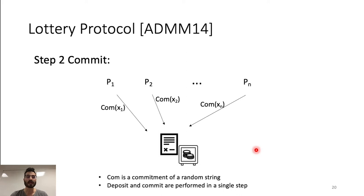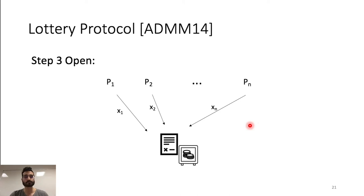In step 1, called the deposit phase, all the players deposit some amount of coin to the smart contract. After that, in step 2, each player samples a random string and sends the commitment to the random string to the smart contract. In the original protocol, deposit and commit are performed in a single step, but we decided to decouple them to clarify the functioning of the protocol. Now, after each player committed in the second phase, in the third step, all the players should open their commitment — the random string. So p1 opens x1, p2 opens x2, and pn opens xn.